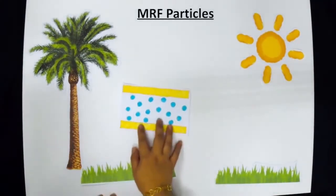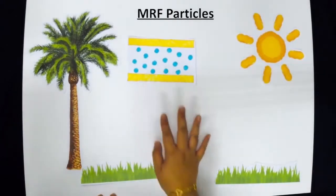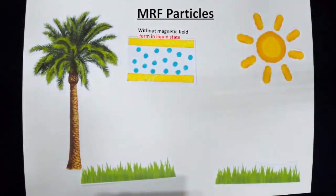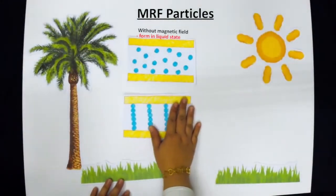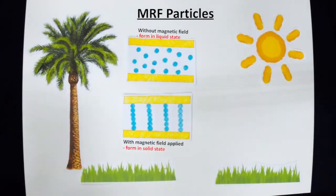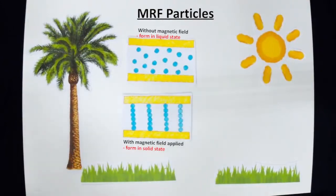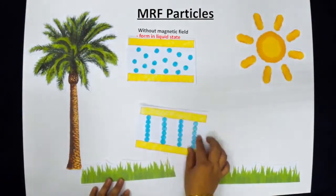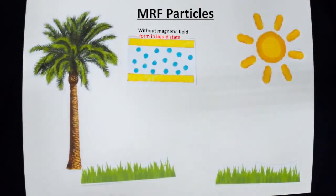The particle of MRF without a magnetic field will behave as ordinary fluid, where the particle can move easily. With the presence of a magnetic field, the particles will diffuse and create resistance, forming the particles into solid state.